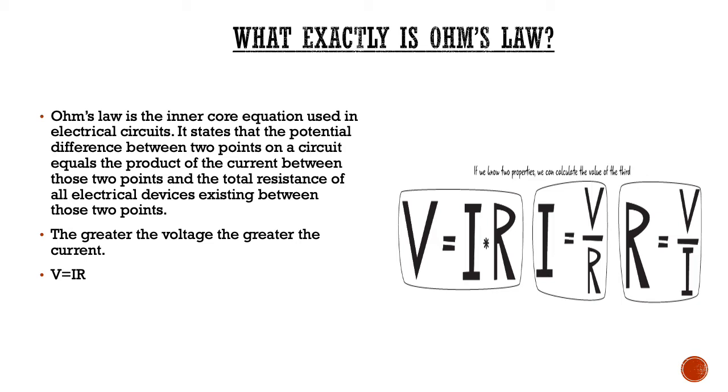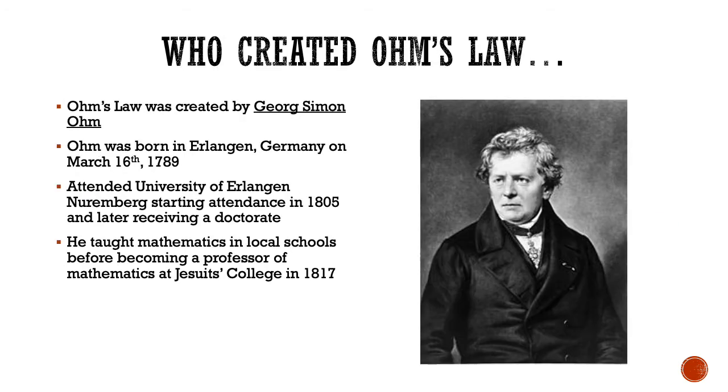Who created Ohm's law? Ohm's law was created by George Simon Ohm. Ohm was born in Erlingen, Germany on March 16th, 1789. He attended the University of Erlingen Nuremberg starting in 1805, later receiving his doctorate degree from this university. After receiving his doctorate, he taught mathematics in local schools while performing physics experiments in local labs. An interesting fact is that local schools weren't paying him enough, so he became a professor to pay for more of his research ideas. He first became a professor at Jesuit's college in 1817, and throughout his career went to several different colleges.